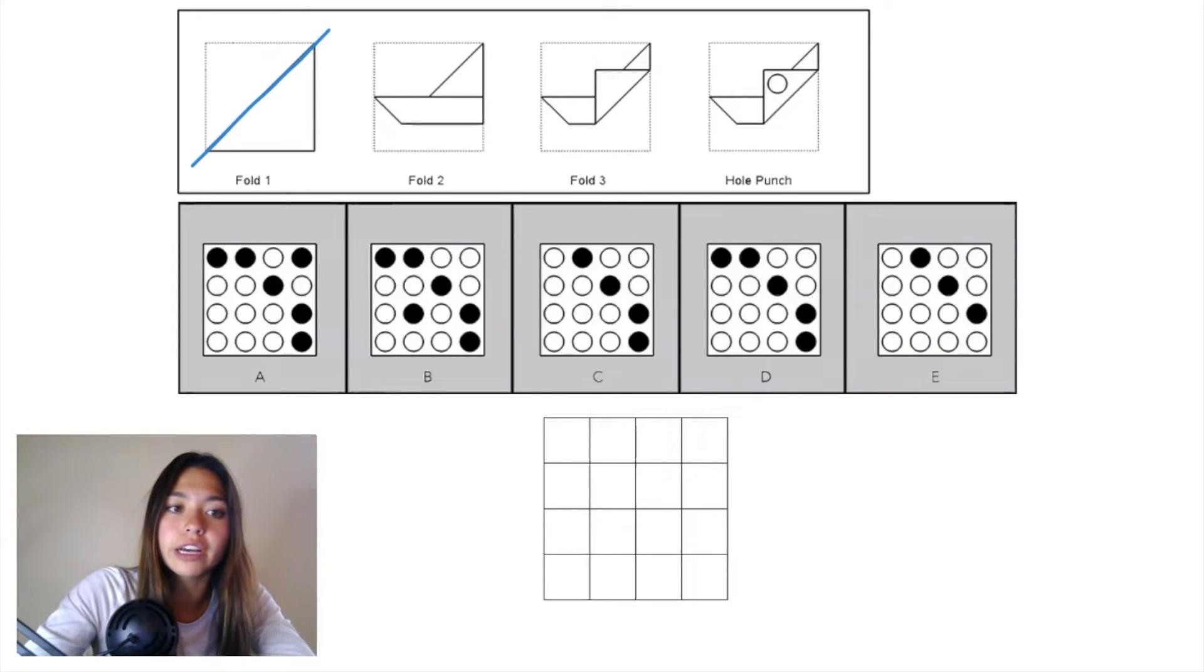We'll start with fold 1. We have a diagonal plane and we're folding this top left triangle down into this bottom right triangle.